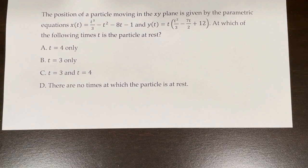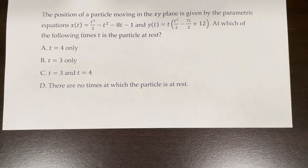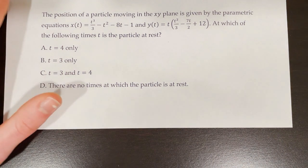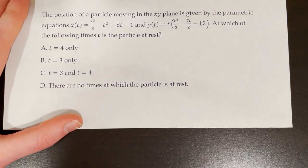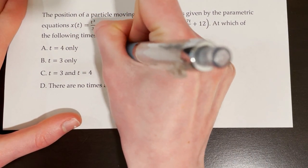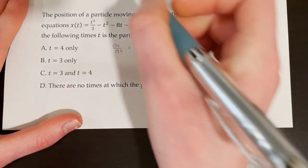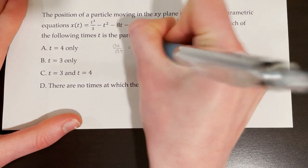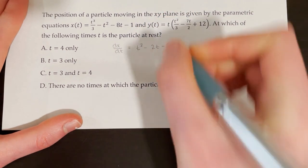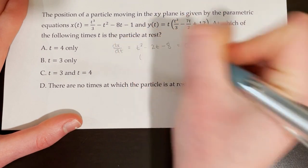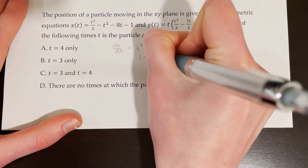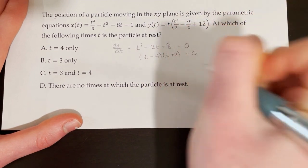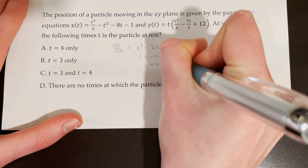The position of a particle is given by x of t equals t³/3 − t² − 8t − 1 and y of t equals t(t²/3 − 7t/2 + 12). At which of the following times t is the particle at rest? We need dx/dt and dy/dt both equal to 0. Taking the derivative of x of t: dx/dt equals t² − 2t − 8, which factors as (t − 4)(t + 2), giving t equals 4 and t equals −2.